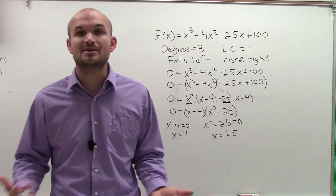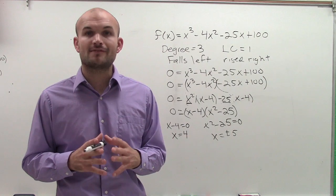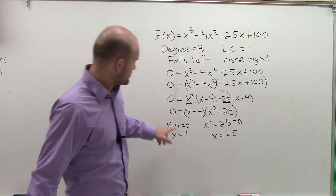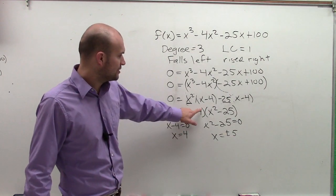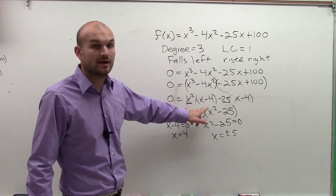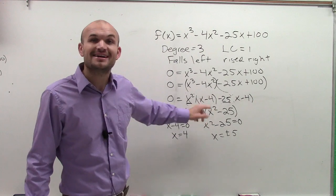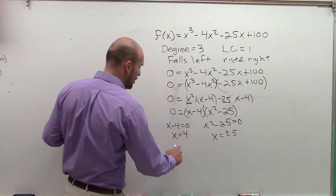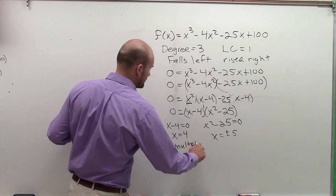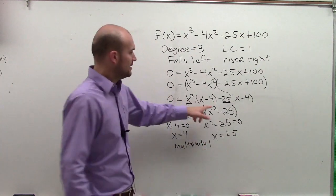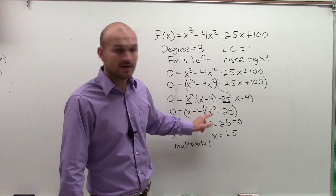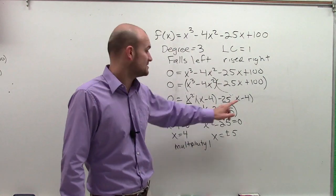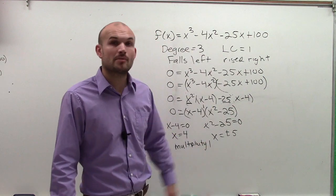Now, what we need to do is determine the multiplicity. Remember, the multiplicity is going to tell us if our graph is going to touch at the zero or if it's going to cross. So here, my multiplicity, I need to look. What you need to do to determine the multiplicity is you need to go back and look at your degree of your factor. Here, my degree of my factor is 1. So actually, all of my zeros have a multiplicity of 1. Now, this one gets pretty confusing for students because they see the squared. But remember, it's the exponent of your factor, not what's inside your factor. So therefore, all of my zeros are going to have a multiplicity of 1.